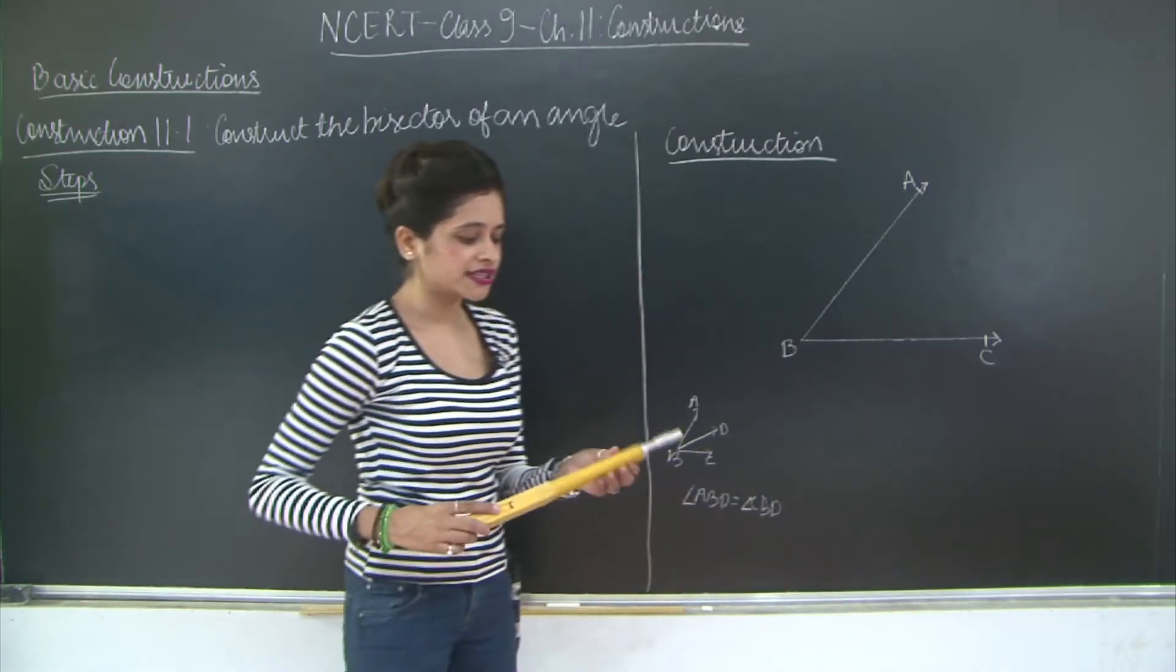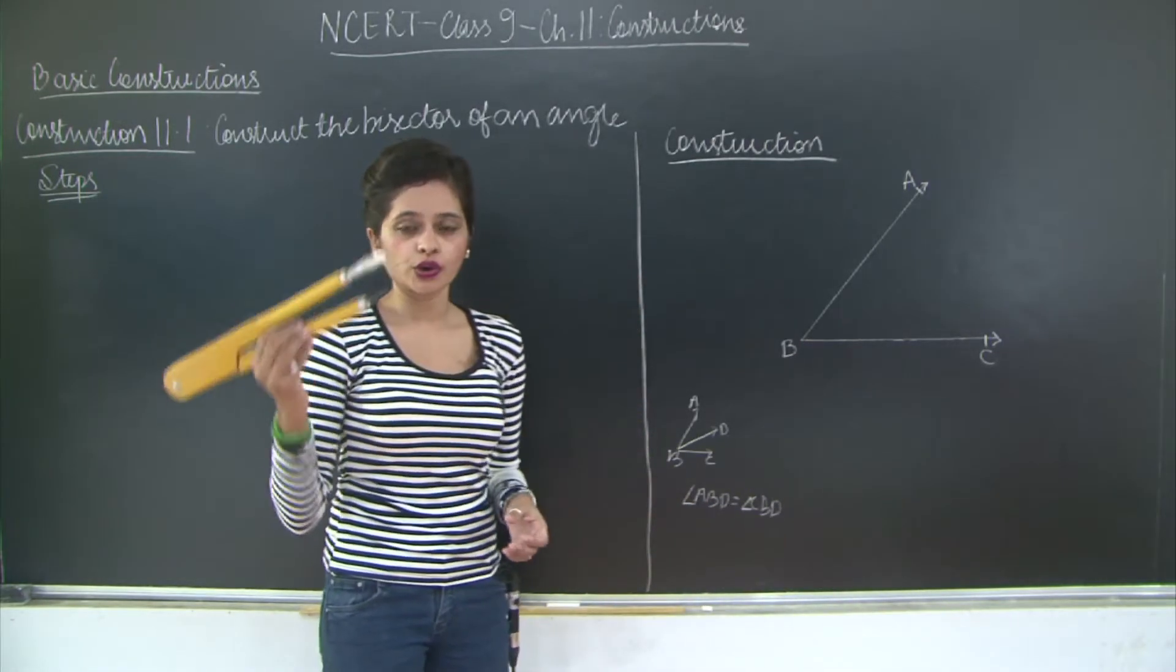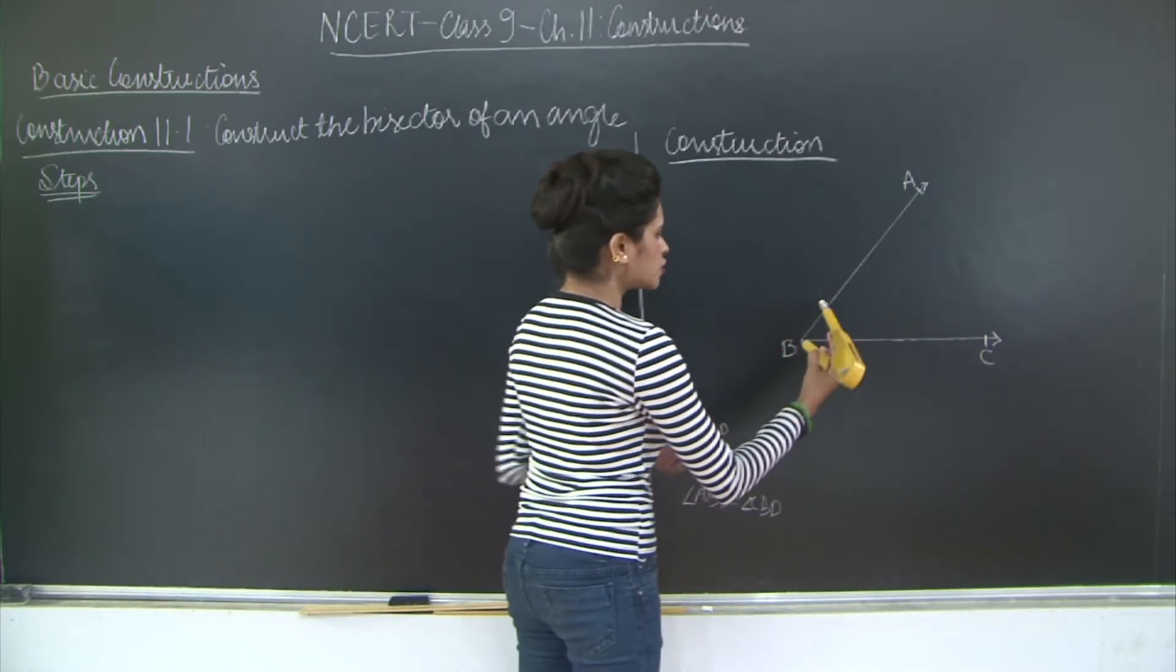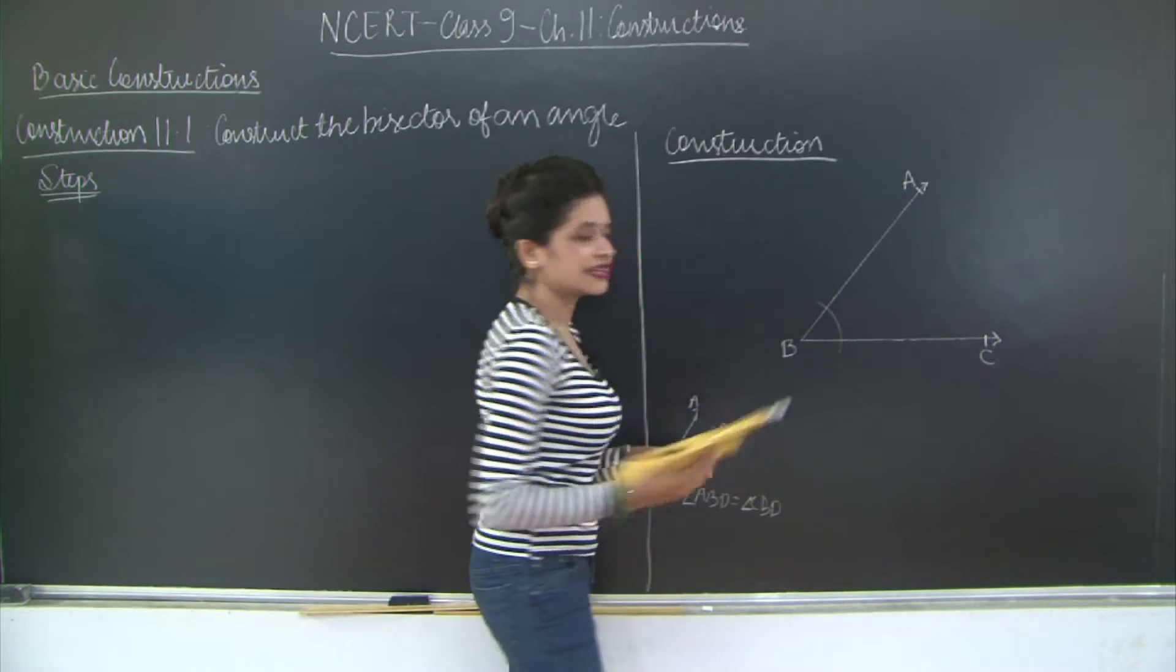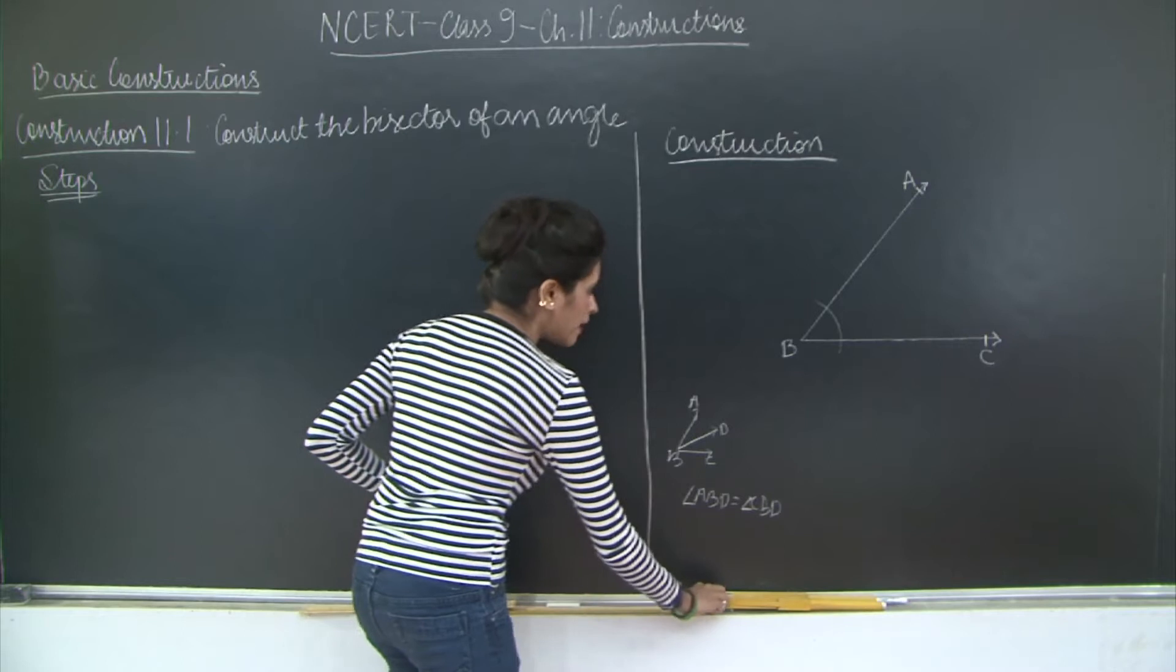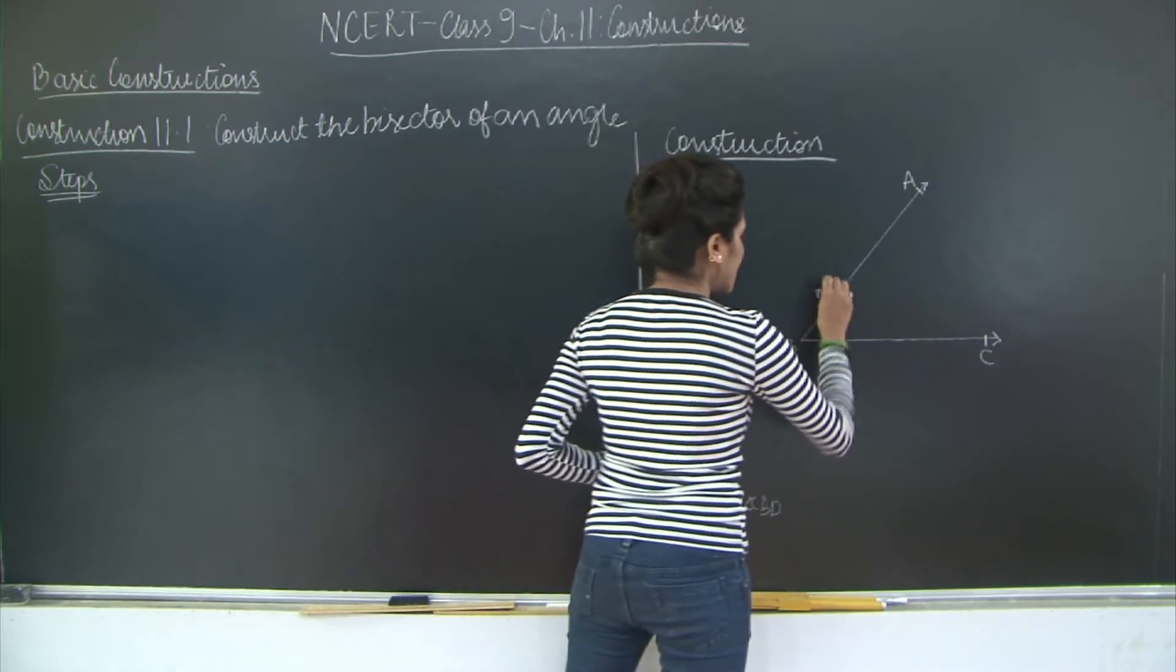First what we are going to do is with B as the center you are going to take a compass. With B as the center you are going to cut an arc on this angle. So let us write down this and you will mark the points as M and N.